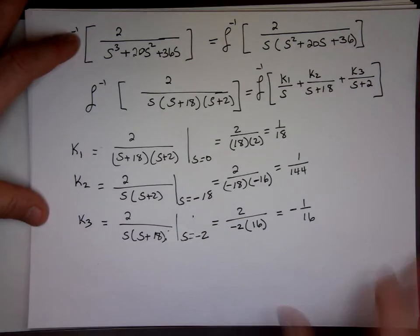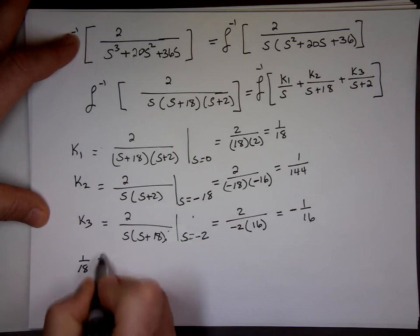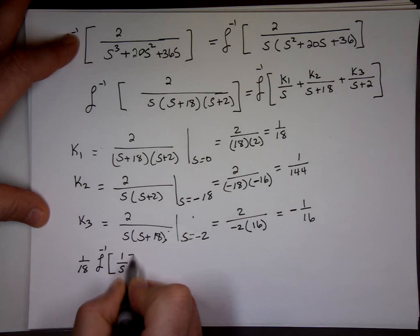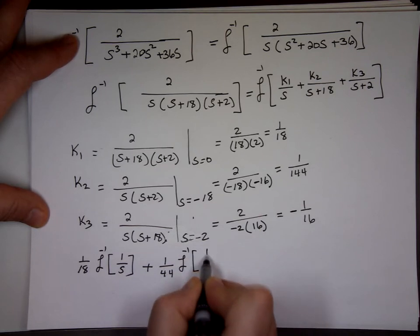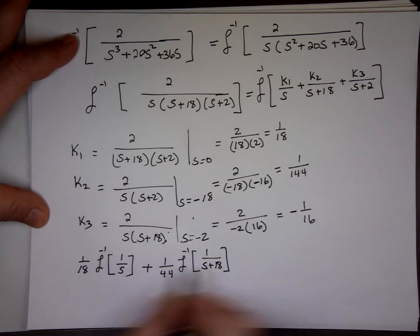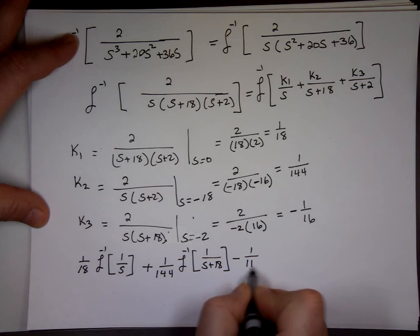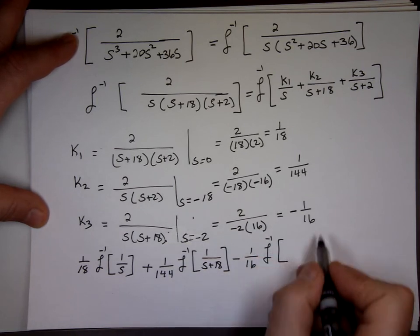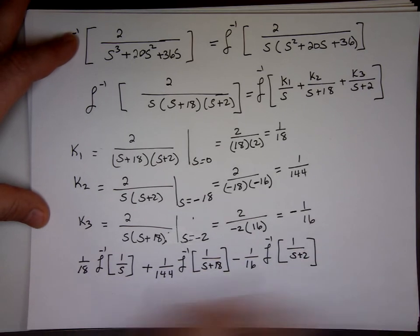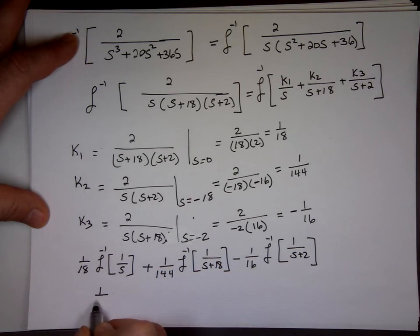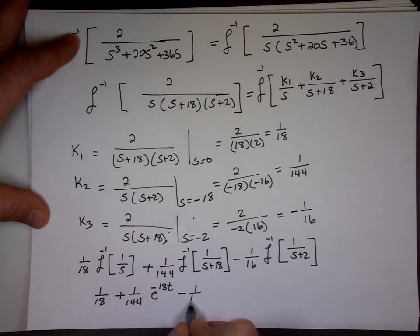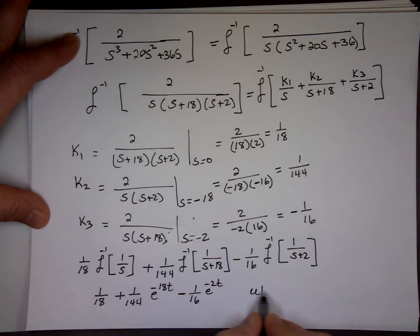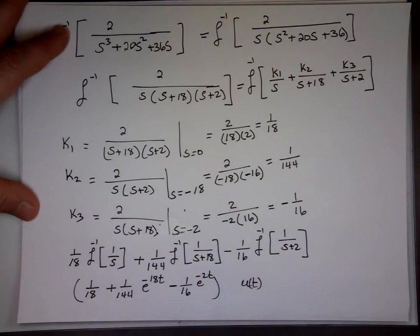So here we go, the answer is going to be K1 which is 1/18, the inverse Laplace of 1 over S, I factor out K1 out. K2 I'm factoring out 1 over 144, the inverse Laplace of 1 over S+18. 1/144, not 44. Minus 1 over 16, the inverse Laplace of what? 1 over S+2. This is u(t), I just leave it, I'll put it outside. 1 over 18 times 1 which is 1 over 18, plus 1 over 144 e^(-18t), minus 1 over 16 e^(-2t) u(t). Voila.